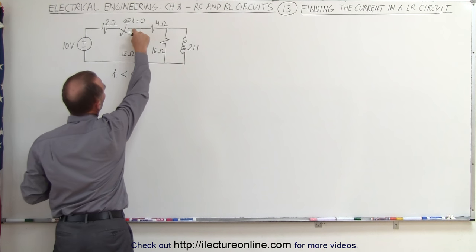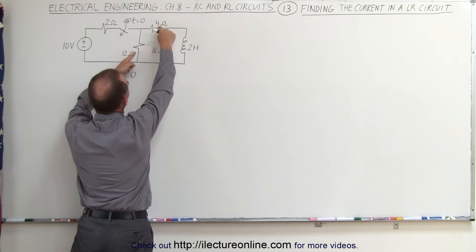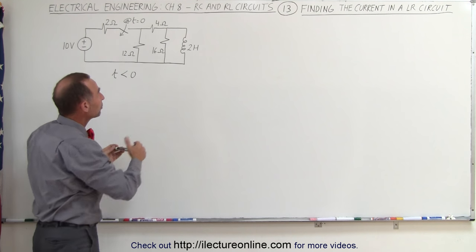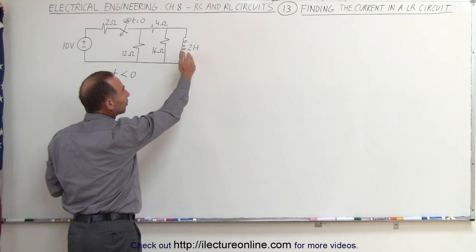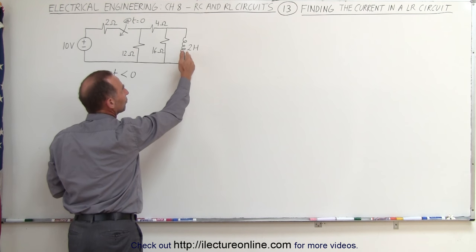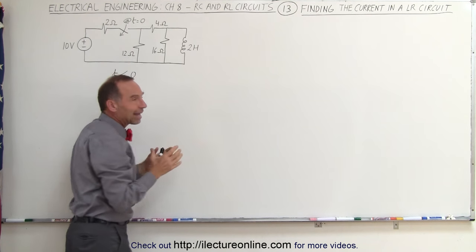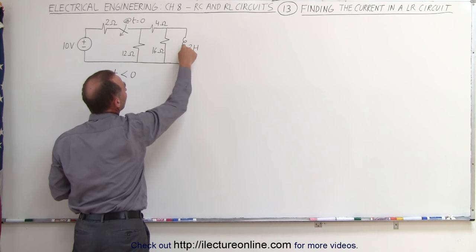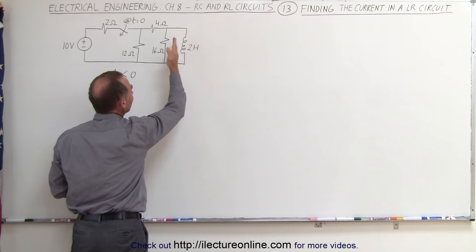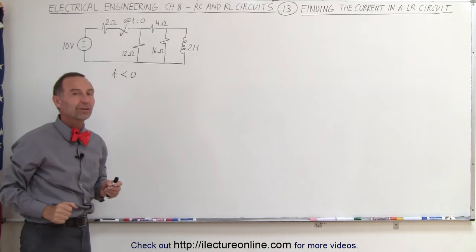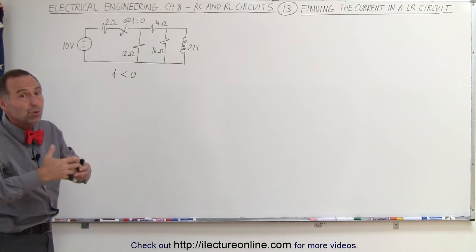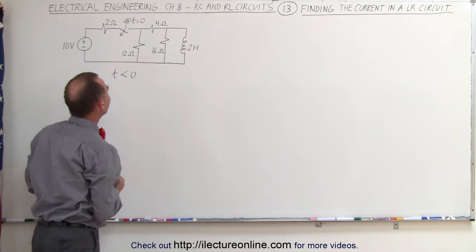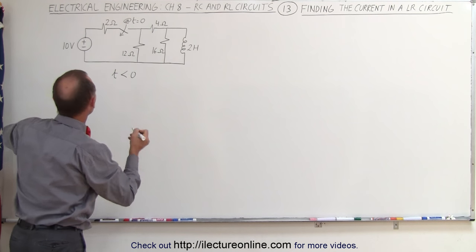The switch will be closed, current will be flowing here, it will split across the branch, and get to this branch point. But in a steady state situation, a pure inductor does not offer any resistance or opposition to the current flow. That means the inductor acts like a short circuit, and all the current that goes to the 4 ohm resistor will go through the inductor and none of it will go through the 16 ohm resistor. So we can simply remove that 16 ohm resistor, leave that branch open, and make the inductor a short.